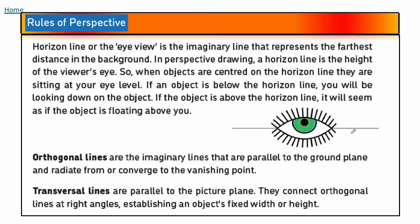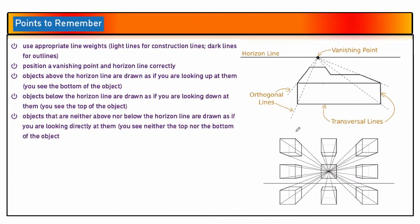There are two things to remember when it comes to the rules of perspective: orthogonal lines and transversal lines. Orthogonal lines direct you towards the vanishing point and help guide and make your 3D drawing realistic. Transversal lines help you create the 3D objects, especially when it comes to width and height. As you can see on the image on the right, the transversal lines help create the 3D object.